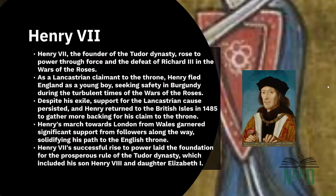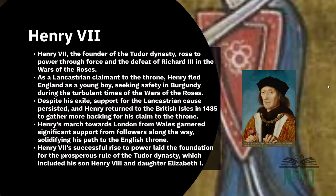As a young boy of 14, he had fled England for Burgundy, seeking safety as the strongest Lancastrian claimant to the throne during the turbulent War of the Roses. During his exile, support for the Lancastrian cause persisted, despite the ongoing conflict with the Yorkist rulers, Edward IV and Richard III. In the summer of 1485, Henry returned to the British Isles aiming to gather more backing for his claim. He set foot in Wales, his homeland, where he enjoyed considerable support and began his march towards London, gaining followers along the way. On August 7, he landed at Mill Bay on the Pembrokeshire coast, starting a journey that would lead him to the English throne.